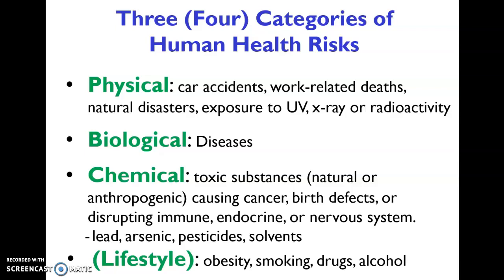In this screencast we will look at the four categories of human health risk, briefly describe them, and then spend some time on biological categories of human health risk. A separate video will be made for chemical. The four major categories are physical, biological, chemical, and lifestyle.